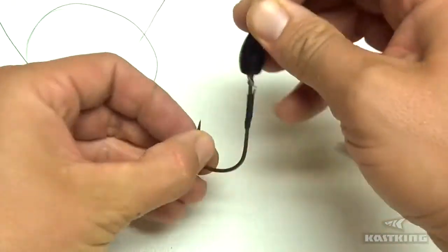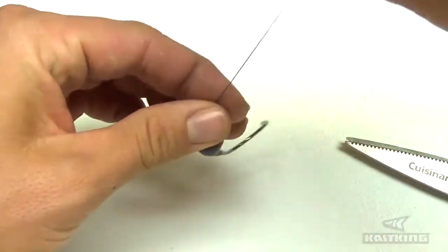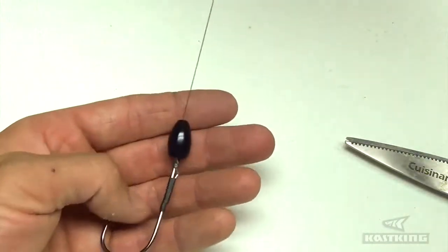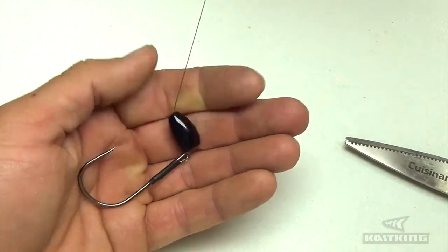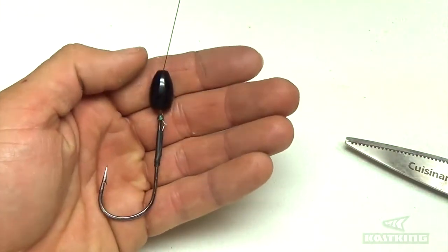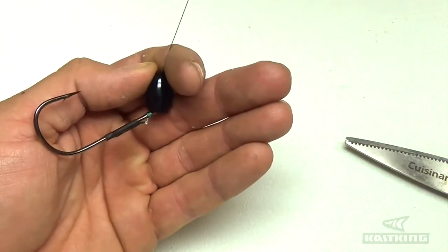Instead of that hook just hanging dead straight, it kicks it out to the side. Kind of hard to show you, but there you go. If I've got it against my hand, it will just lay flat, but then when you pull on that line, it kicks it out.